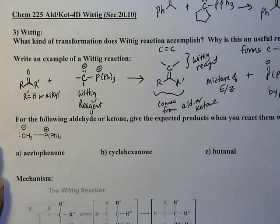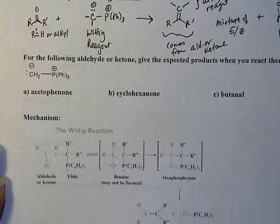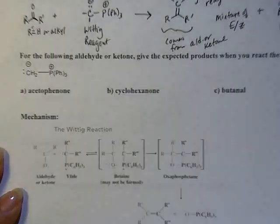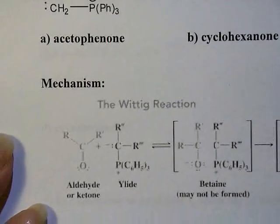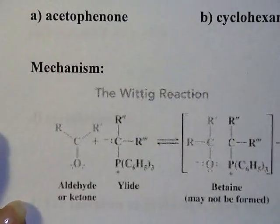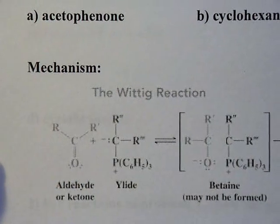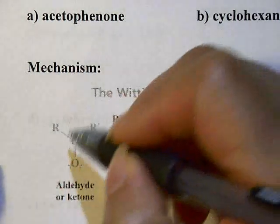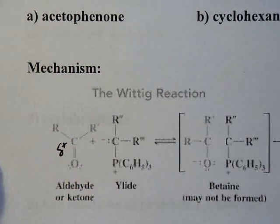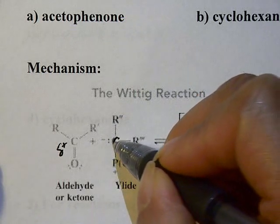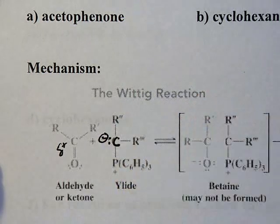Continuing with the Wittig reaction, we're ready to look at the mechanism. We have an aldehyde or ketone, and as you know, the carbon of the carbonyl is electrophilic because the oxygen is pulling electron density towards it. We have a nucleophile — this carbon right here with the negative charge and a lone pair.